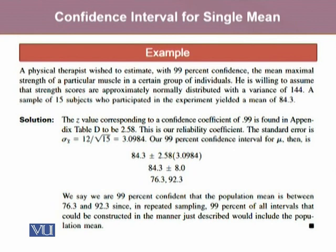The standard error is sigma x-bar, which is sigma divided by the square root of n. Sigma is the square root of the variance, which is the square root of 144 divided by the square root of 15, giving 3.0984. Hence, our 99% confidence interval for mu is given as 84.3 (the point estimate) plus or minus 2.58 (the reliability coefficient) times 3.0984 (the standard error of the mean).